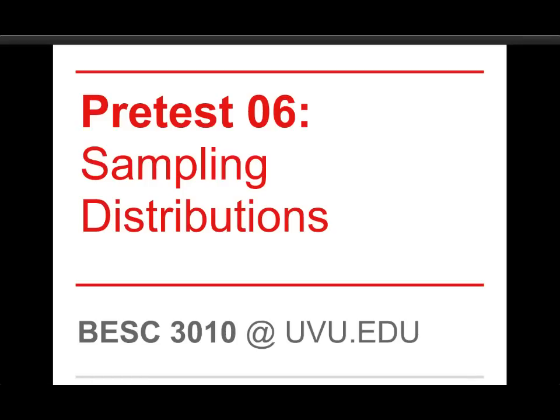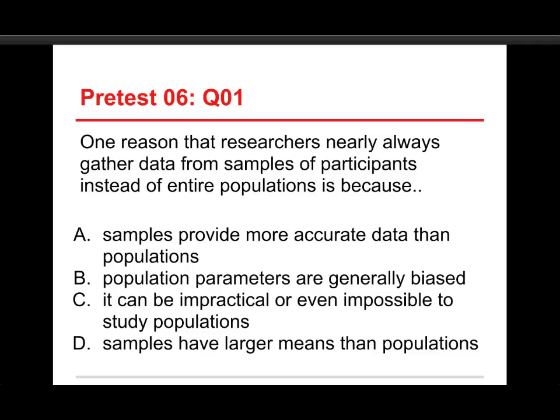Hi, this is Bart Polson, and this video is for Behavioral Science 3010, Statistics for the Behavioral Sciences at Utah Valley University. In this video, we're going to be looking at the pre-test, the online pre-test, for Chapter 6, which is about sampling distributions.